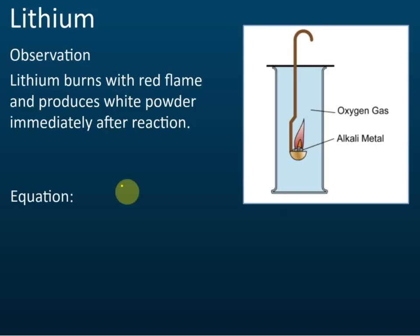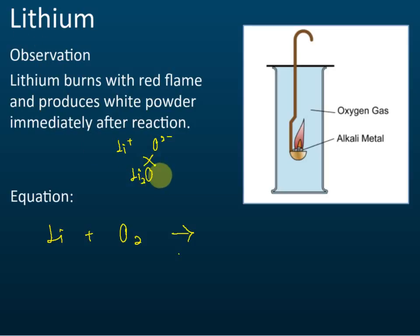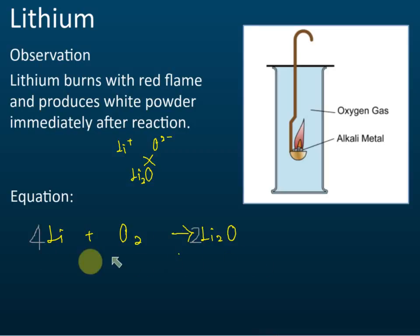You need to know two equations. The first is lithium reacting with oxygen to produce lithium oxide. The formula for lithium oxide is Li₂O — lithium ion is Li⁺ and oxide is O²⁻, so the formula is Li₂O. Lithium oxide written as Li₂O: is this equation balanced? No, so we need to balance it.